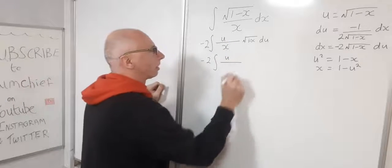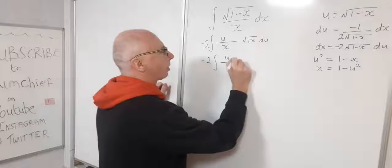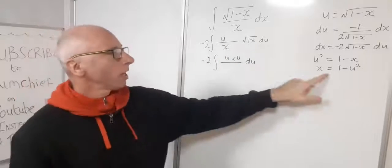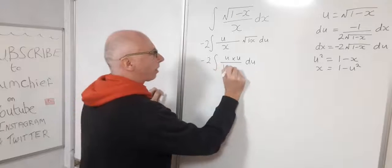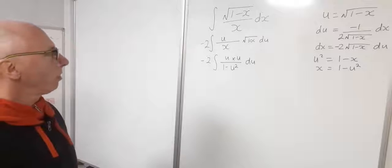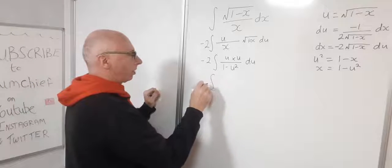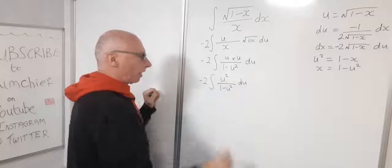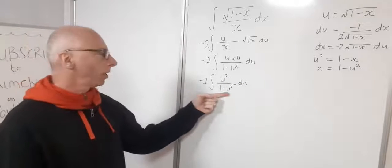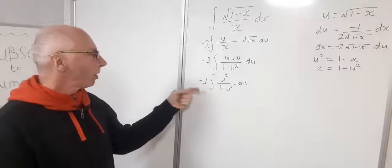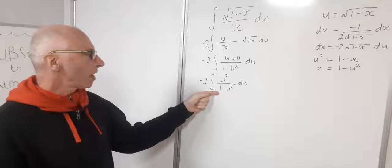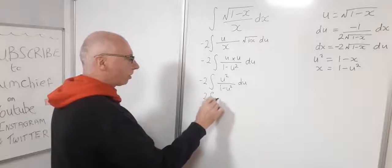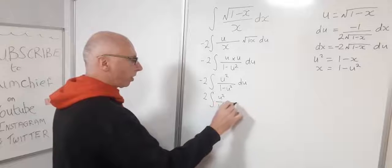The square root of 1 minus x in the numerator is u, giving u times u du, and the denominator x becomes 1 minus u squared. Cleaning up, the integral becomes negative 2 u squared over 1 minus u squared du. Distributing the minus sign and flipping, this becomes 2 times u squared over u squared minus 1 du.